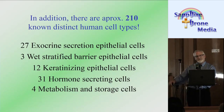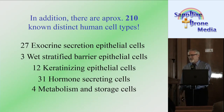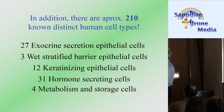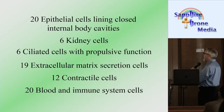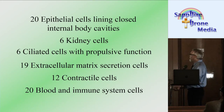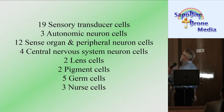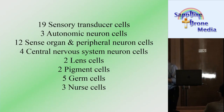In addition, there are approximately 210 known distinct human cell types: 27 exocrine secretion epithelial cells, 3 wet stratified barrier epithelial cells, 12 keratinizing epithelial cells, 31 hormone secreting cells, 4 metabolism and storage cells, 20 epithelial cells lining closed internal body cavities, 6 kidney cells, 6 ciliated cells with propulsive function, 19 extracellular matrix secretion cells, 12 contractile cells, 20 blood and immune system cells, 19 sensory transducer cells, 3 autonomic neuron cells, 12 sense organ and peripheral neuron cells, 4 central nervous system neuron cells, 2 lens cells, 2 pigment cells, 5 germ cells, and 3 nurse cells — totaling 210.